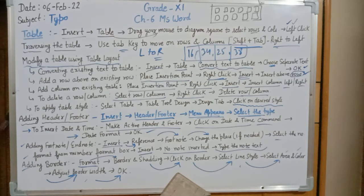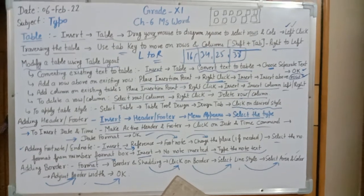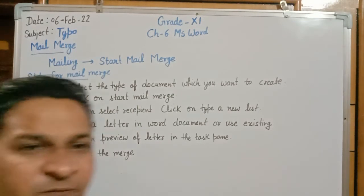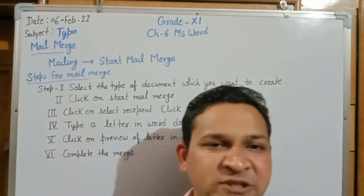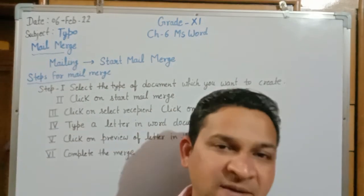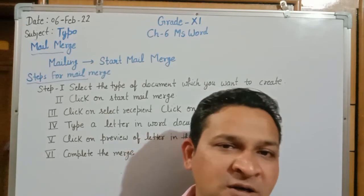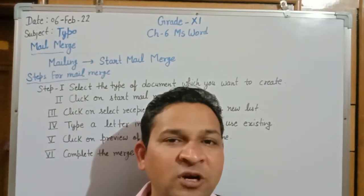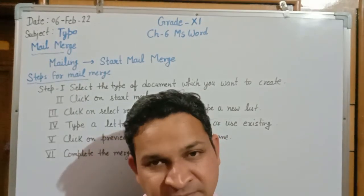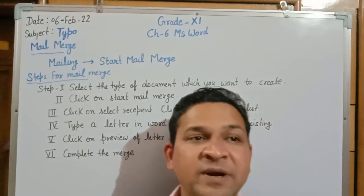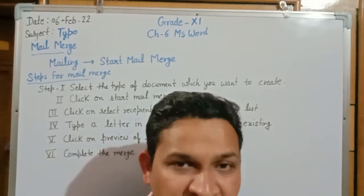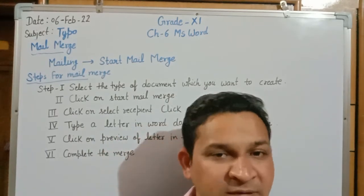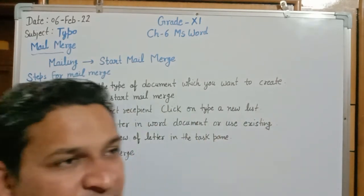That covers tables, header and footer, footnotes, and borders. Now the last topic in this chapter is Mail Merge. Mail Merge is the concept of preparing a document to send to a group of people — sending the same document to different addresses. It is a method to send a document to a group of people without typing it again and again for each different address.